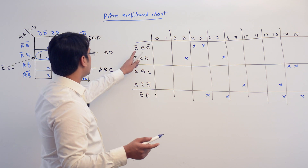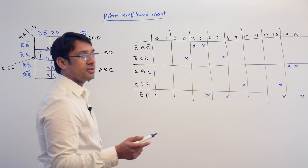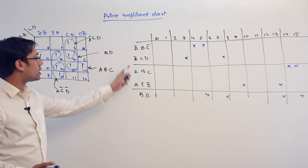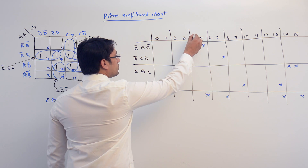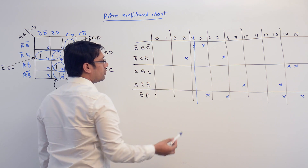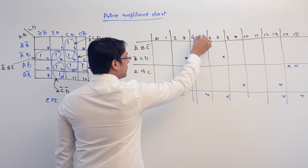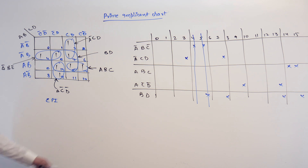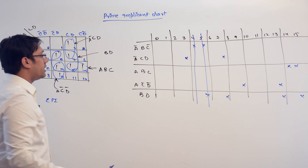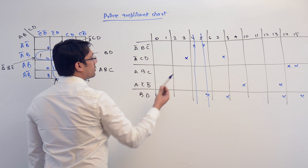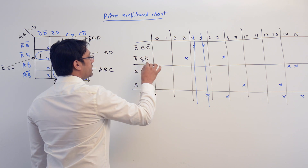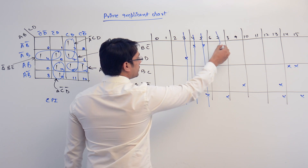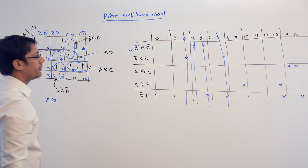If you take the first essential prime implicant, A complement, B, C complement — why is it essential? Because it is covering term 4, which is not covered by anything else. So A complement, B, C complement is covering 4 and 5, so no one else needs to cover them. Next, A complement, C, D is also an essential prime implicant because it is covering term 3, which is not covered by anything else — it also covers 7.